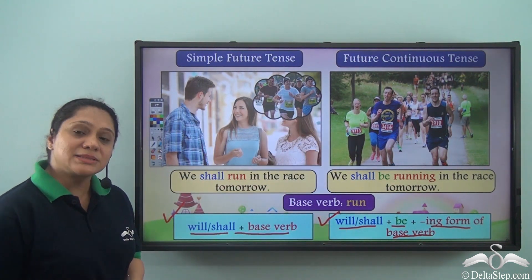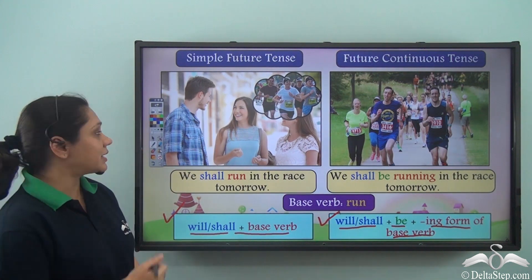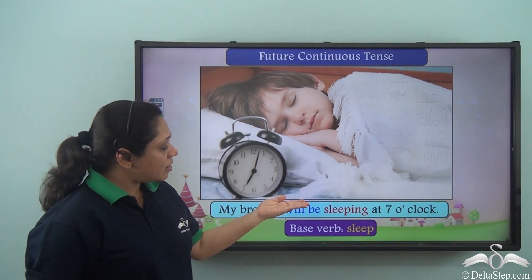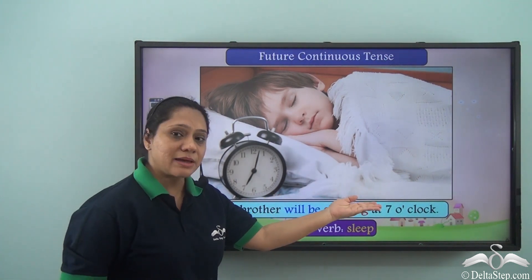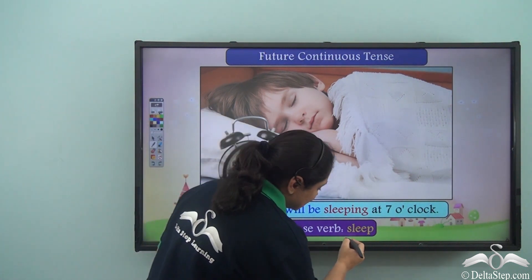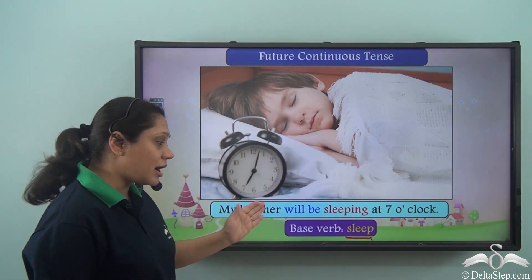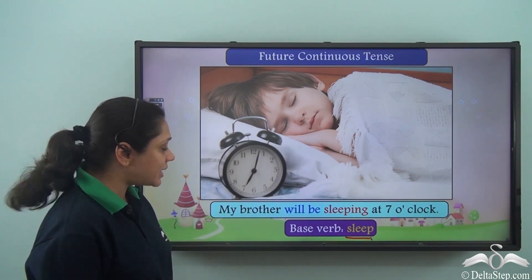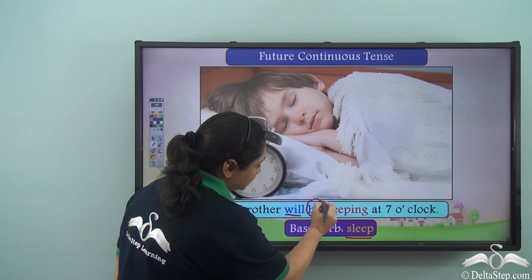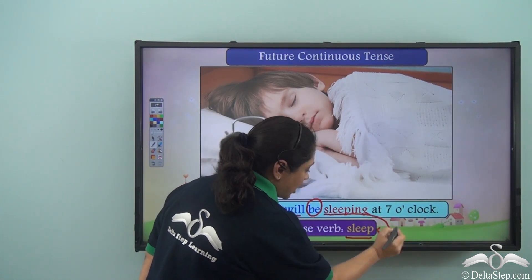Let us read some more examples of the future continuous tense. 'My brother will be sleeping at seven o'clock.' What is the base verb here? Sleep. And how have we formed our verb in the future continuous tense? Will, then be, then the -ing form of the base verb: sleep — giving us will be sleeping.